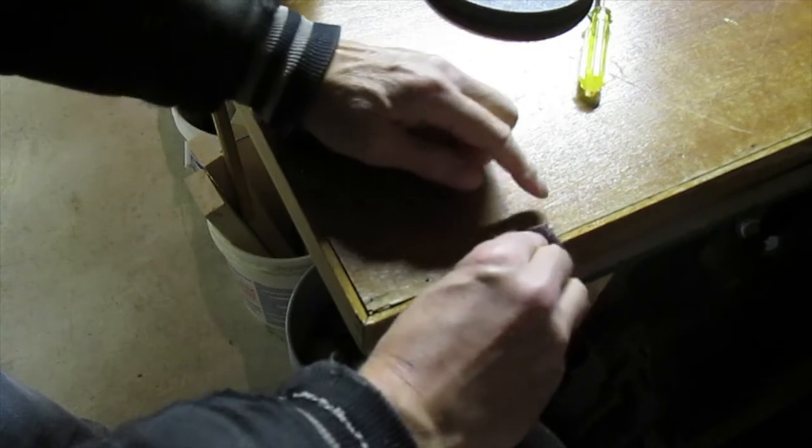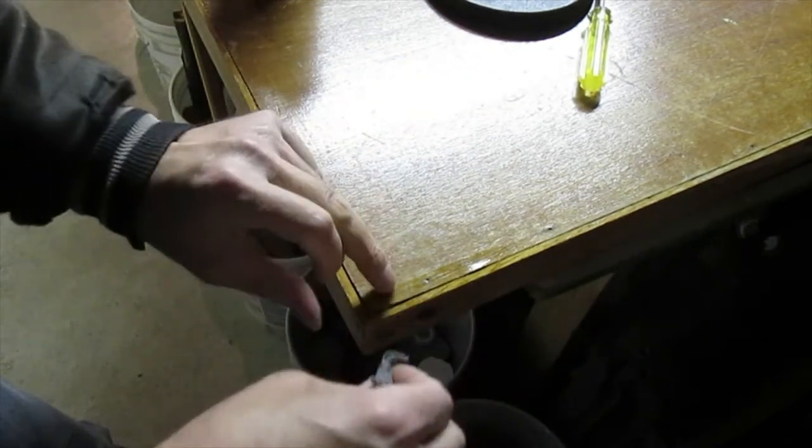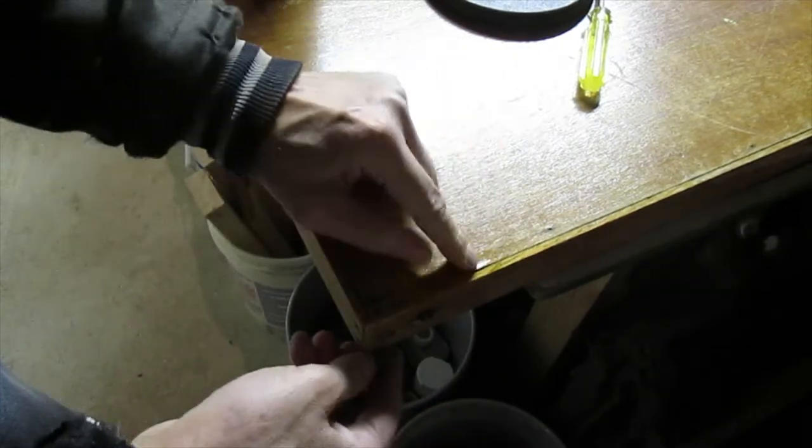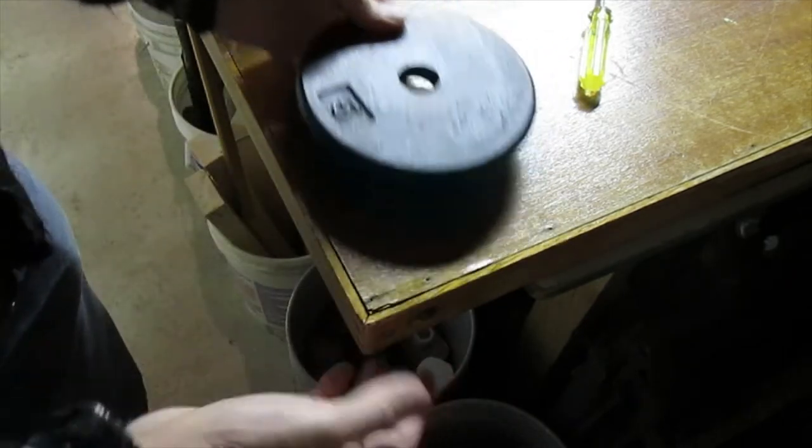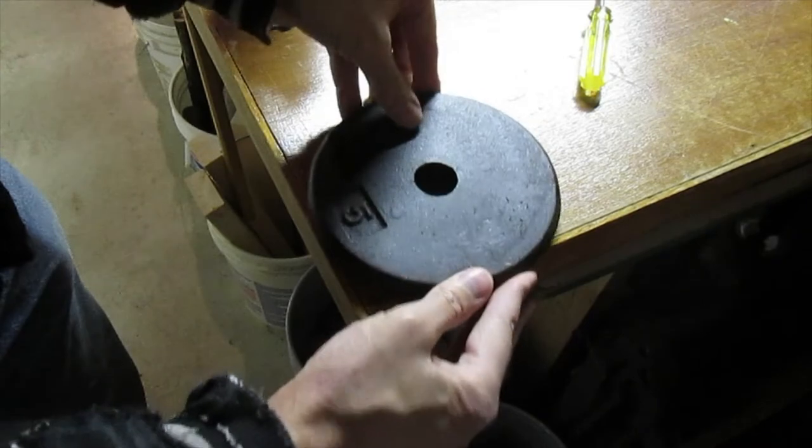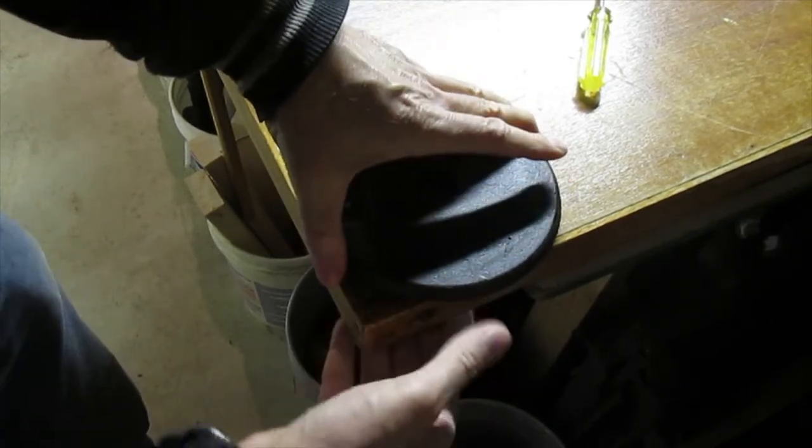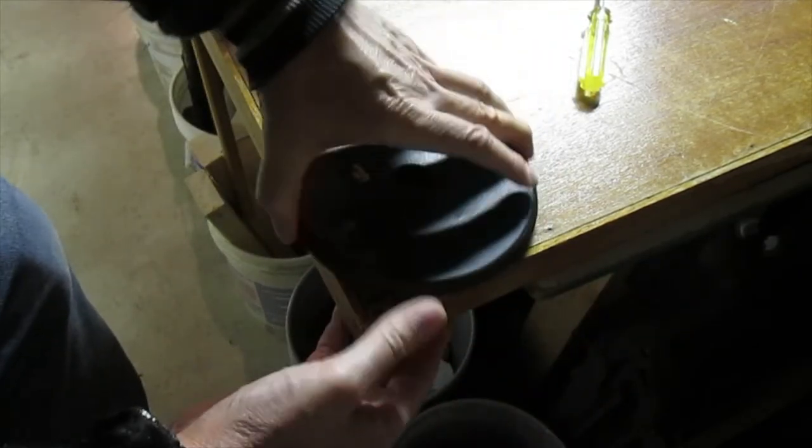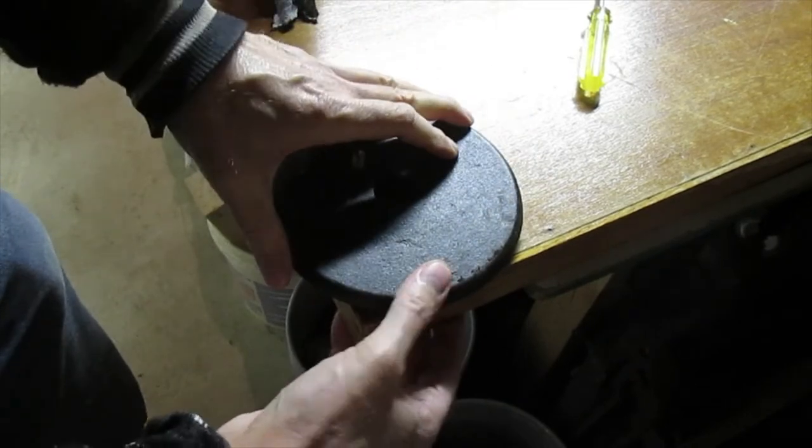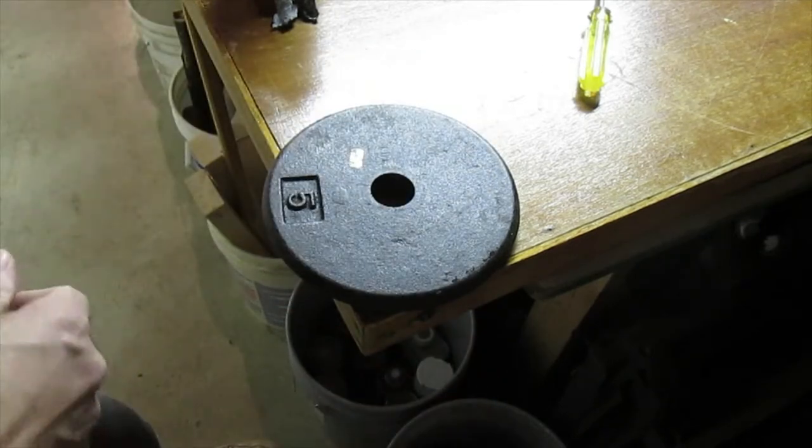Got a wet rag, and this glue is water cleanup. Works really nice. Spread that out. Then I'm going to take a five-pound weight, set that on there so it pushes that down. There we go, that'll hold that down until it dries. I'll let it dry overnight.